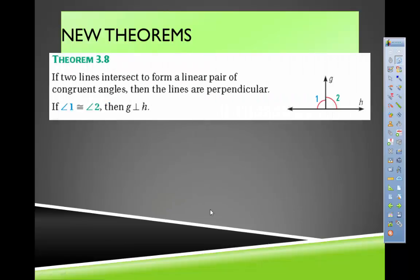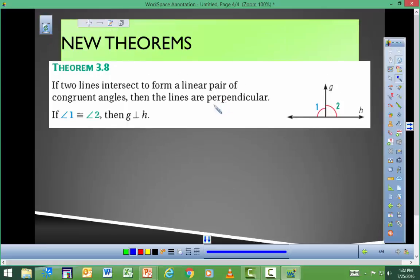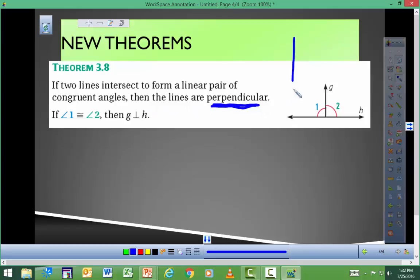Here's a new theorem — Theorem 3.8: if two lines intersect to form a linear pair of congruent angles, then the lines are perpendicular. That's similar to the warm-up problem. When two lines are perpendicular, they form right angles. This theorem says that if those two angles are congruent and form a linear pair, then the lines are perpendicular.